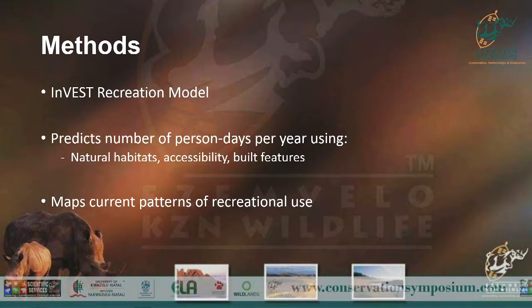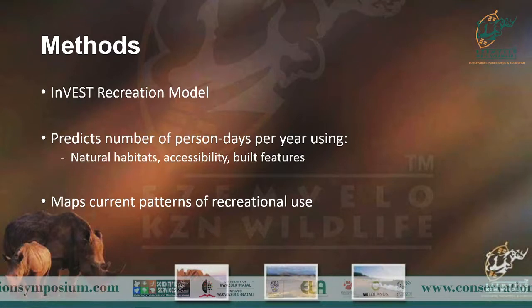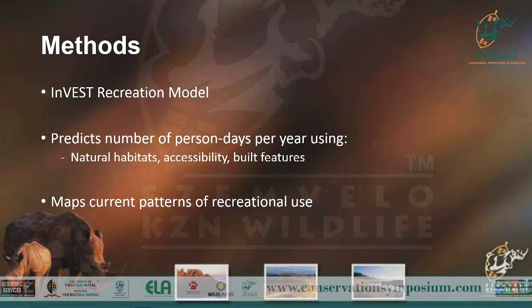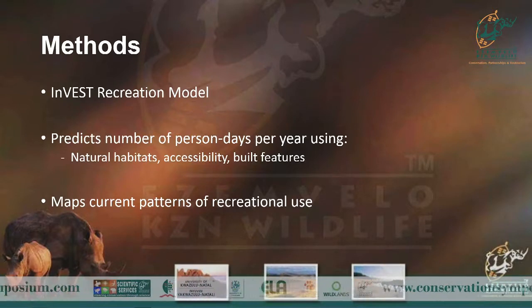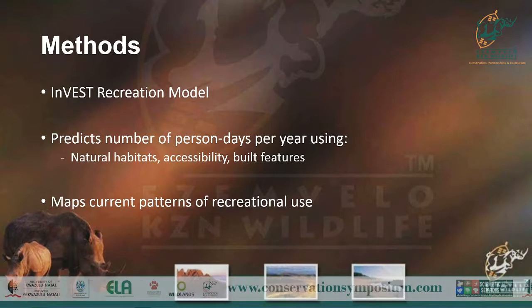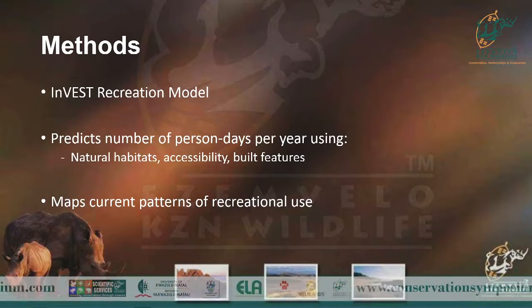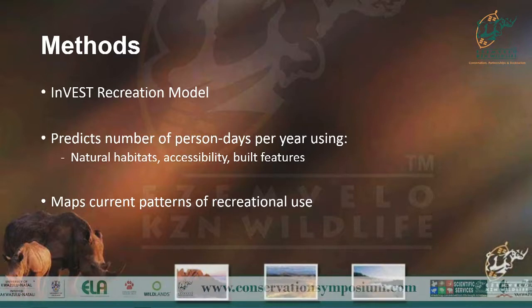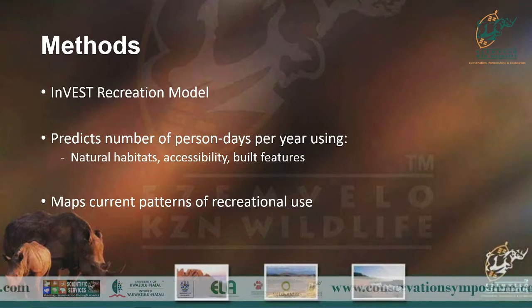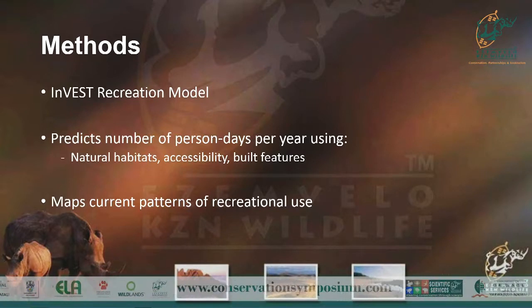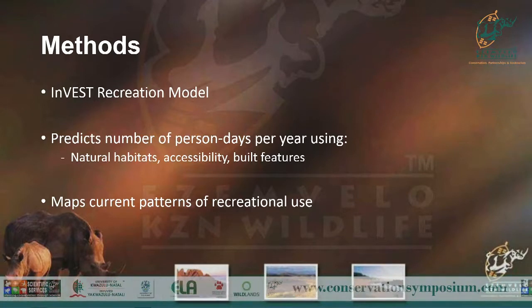You decide on factors that you think influence a visitor or tourist to go to an area. The model then goes to a social networking platform called Flickr, which is an online photo album where pictures are geotagged. The model uses that as a proxy — if 50,000 pictures are taken in a year at a location, we can safely say 50,000 people went there per year. That's essentially how the model works.